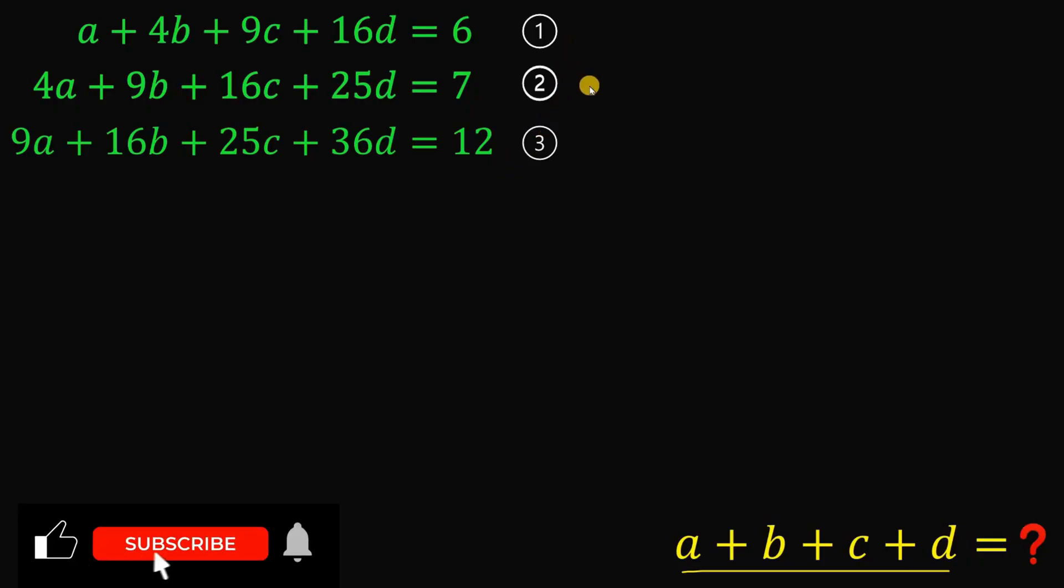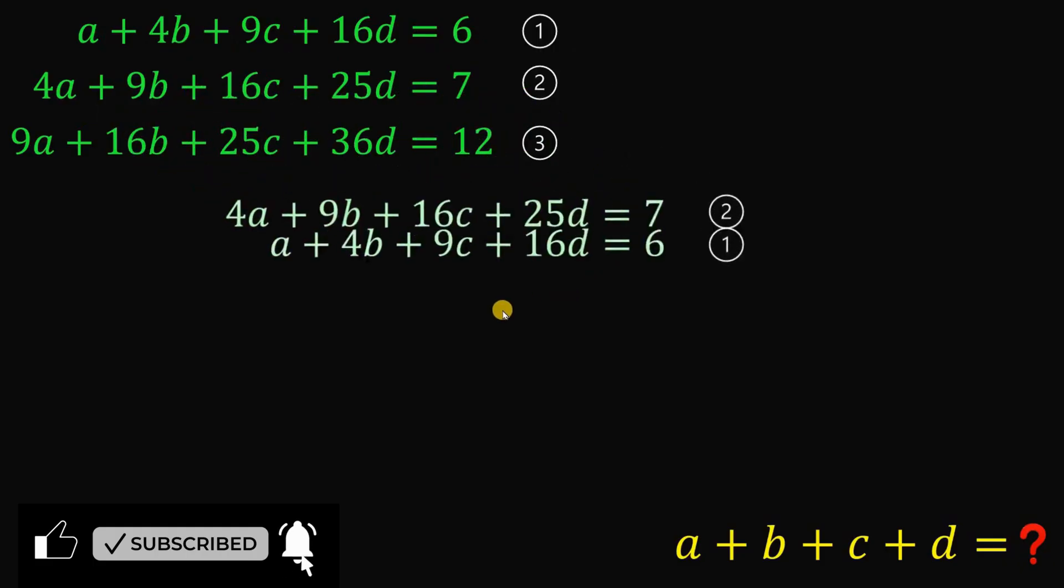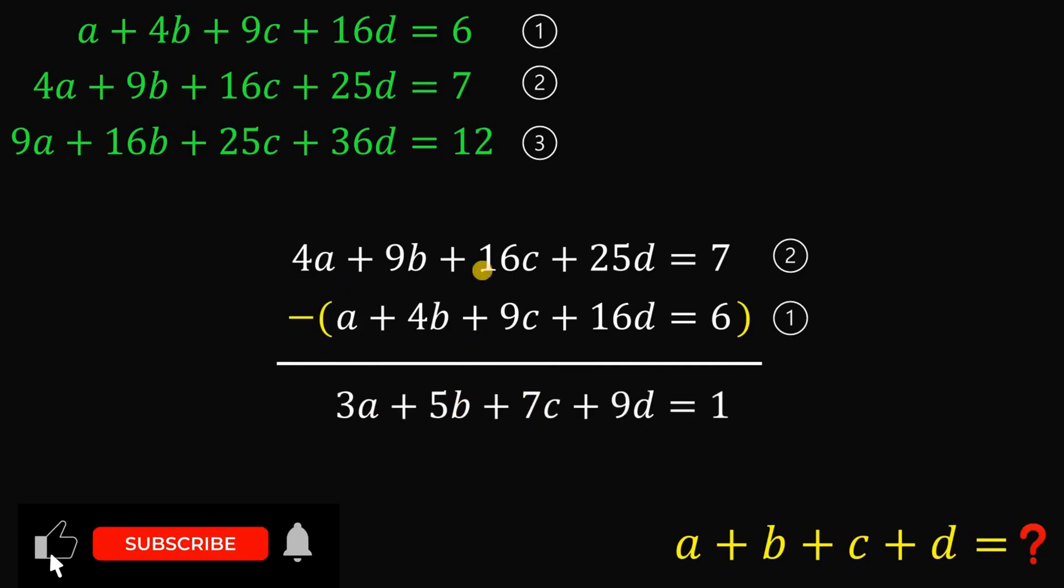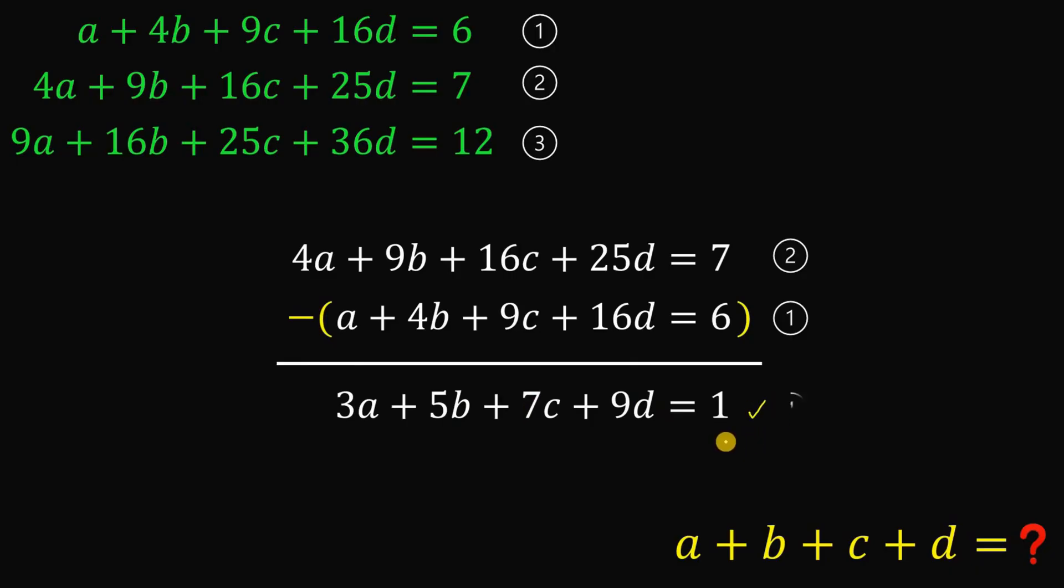Now let's use equation 1 and equation 2. What we're going to do is subtract equation 1 from equation 2. If we do that, we get 3a plus 5b plus 7c plus 9d equals 1. Let's call this equation number 4.